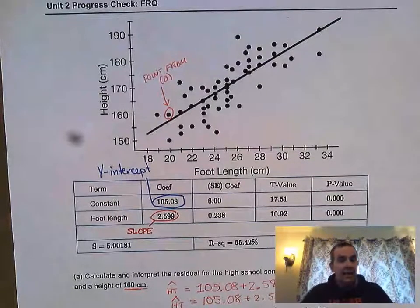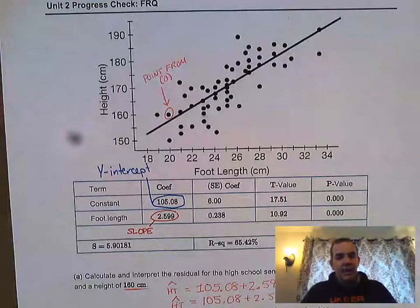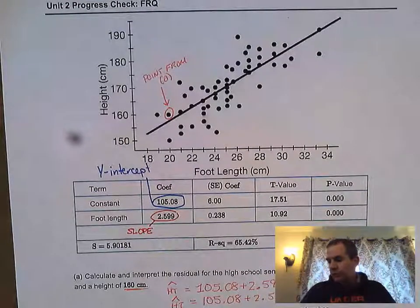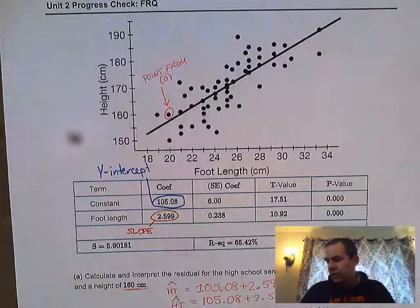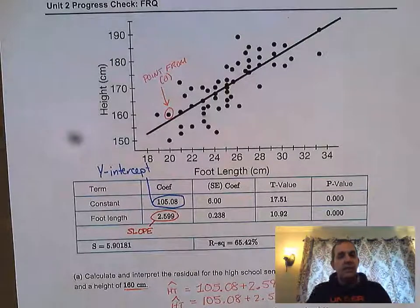I'm moving on to question 2 part A. Part A asks me to calculate and interpret the residual for a high school senior with a foot length of 20 centimeters and a height of 160 centimeters.